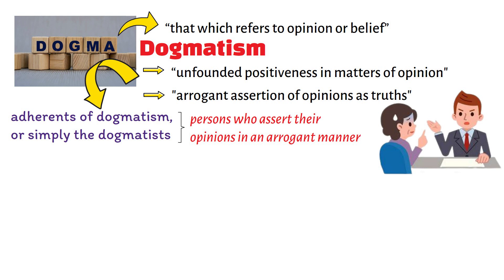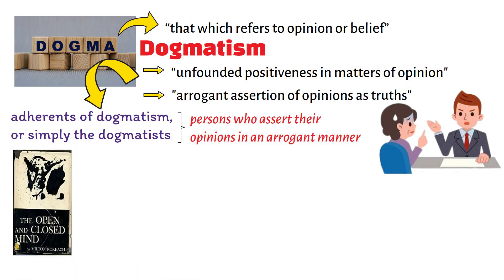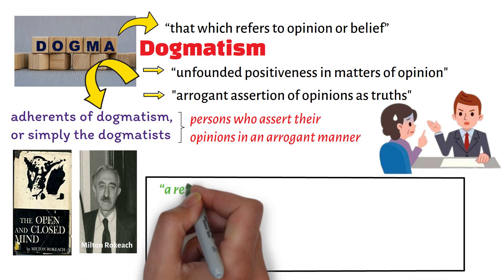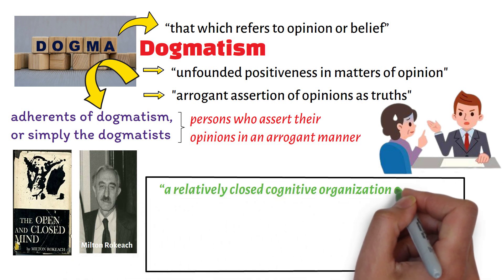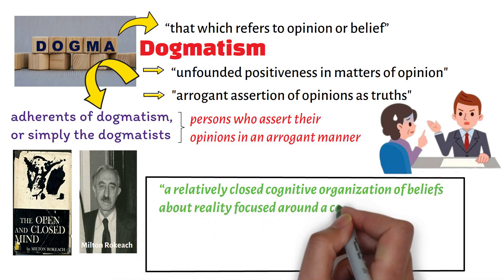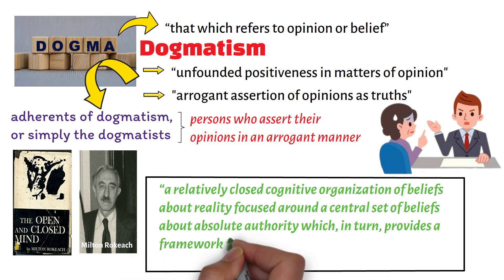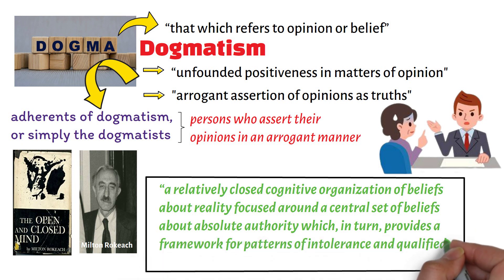In his famous work titled The Open and Closed Mind, Milton Rokic defines dogmatism as a relatively closed cognitive organization of beliefs about reality focused around a central set of beliefs about absolute authority which, in turn, provides a framework for patterns of intolerance and qualified tolerance toward others.